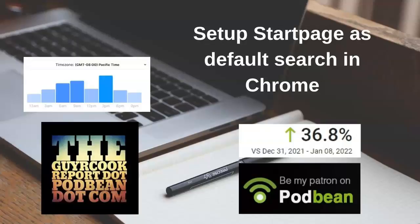If you set up Startpage as your search engine in Chrome, I'm going to have a link in the show notes. If you go to the guyrcookreport.podbean.com, look at this episode and it's got the link right there in the notes — the Google document that I have.